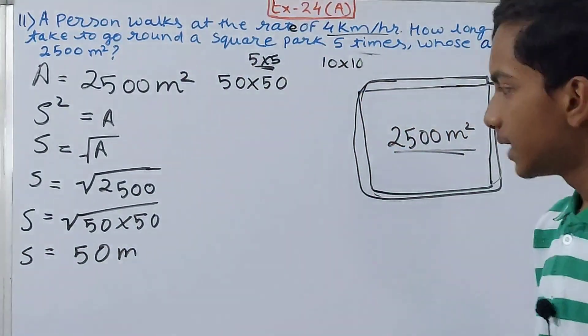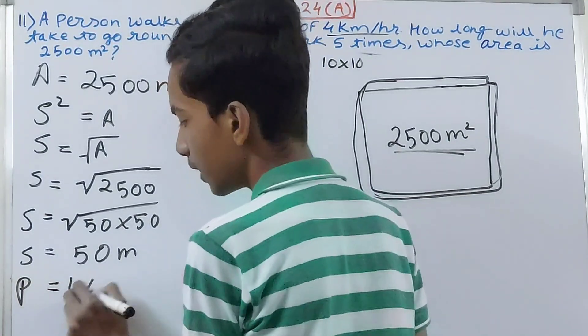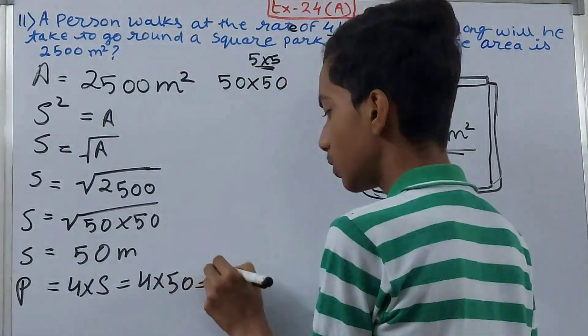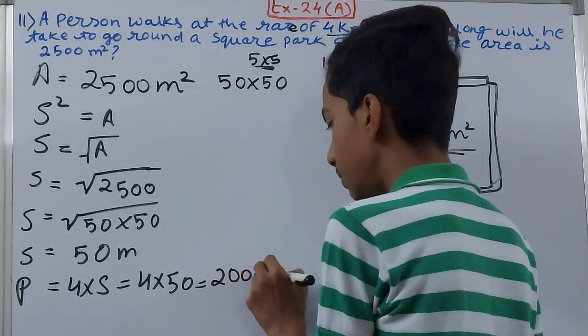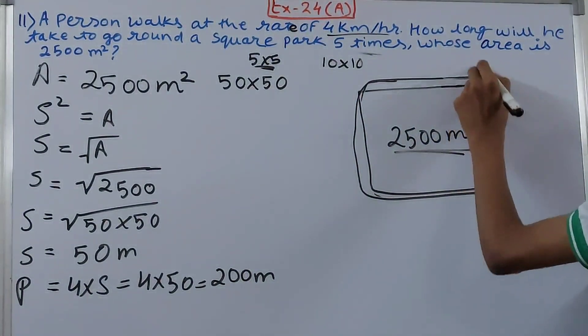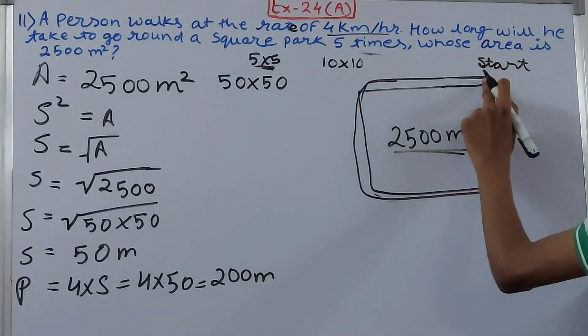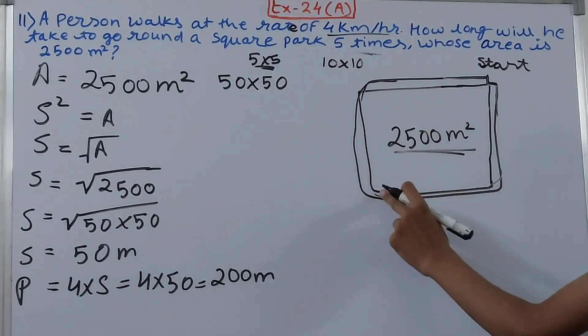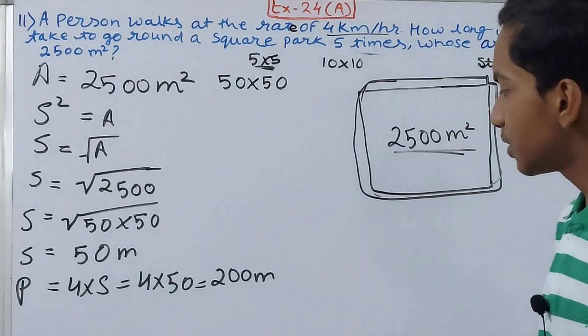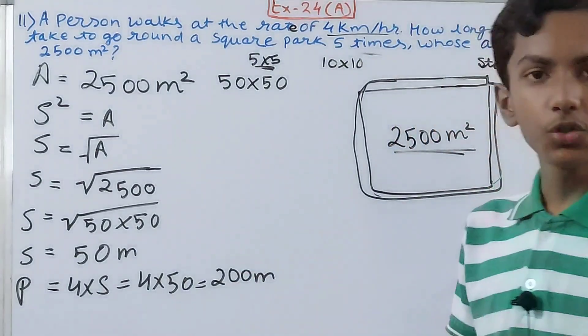So perimeter becomes 4 times side, that is 4 times 50, which equals 200 meters. This means if the person starts from here and goes around the entire thing - from here all the way to this corner, then this corner, then this corner, and back to the original point - he is traveling a distance of 200 meters.